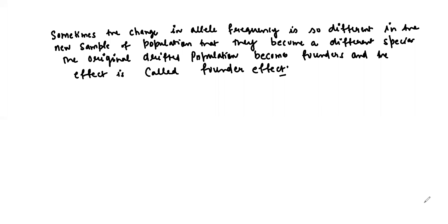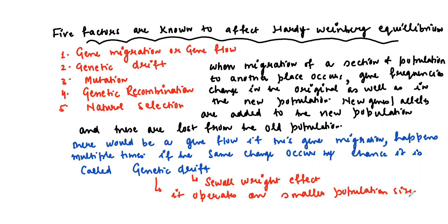These are the five factors which affect Hardy-Weinberg Equilibrium: gene migration and gene flow, genetic drift, mutation, genetic recombination, and natural selection. If the word 'lack' is written before each factor, population equilibrium is maintained. If simply written without 'lack,' population is not in equilibrium. Genetic drift is also called the Sewall Wright effect and operates on smaller population sizes.